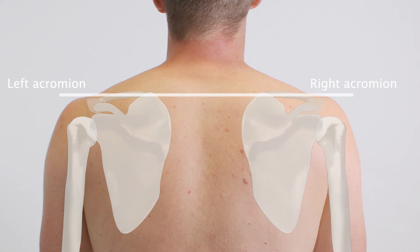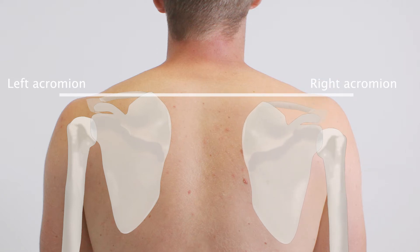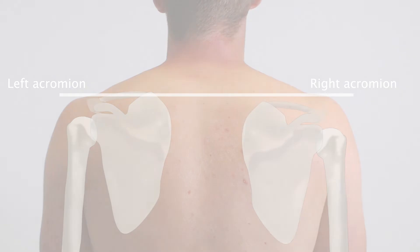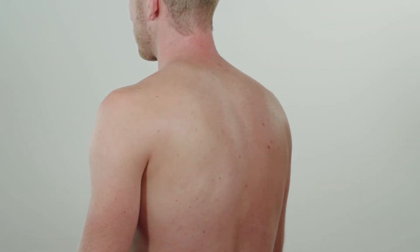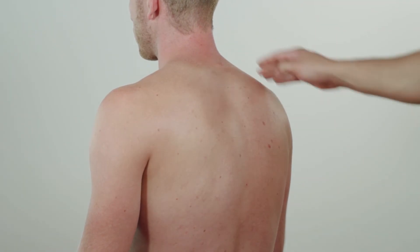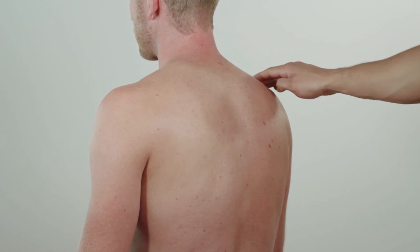Significant asymmetry can be a sign of, for example, scoliosis, muscular atrophy, or an anomalous posture because of discrepancies in limb length. This patient is only notable for a discreetly elevated right shoulder.